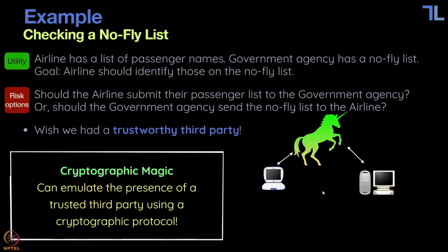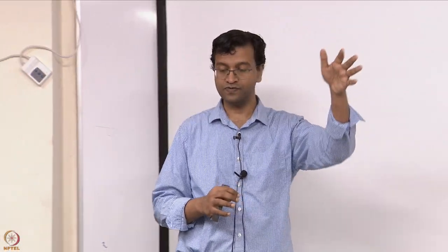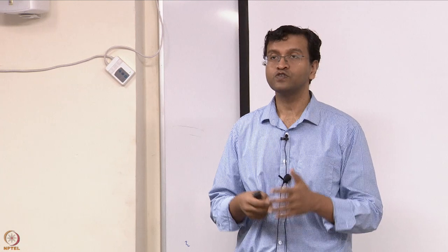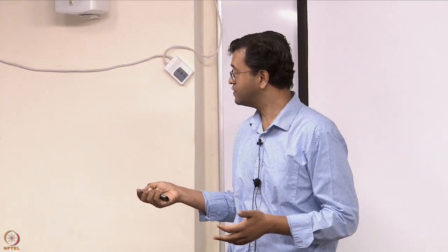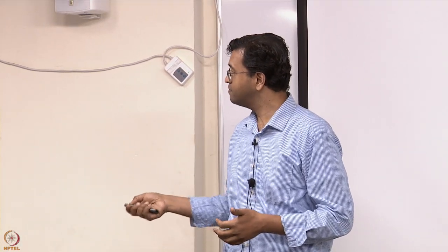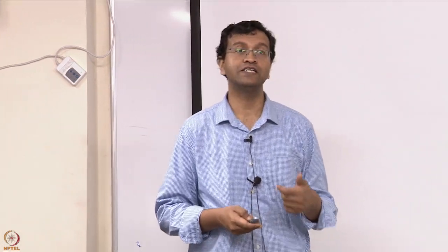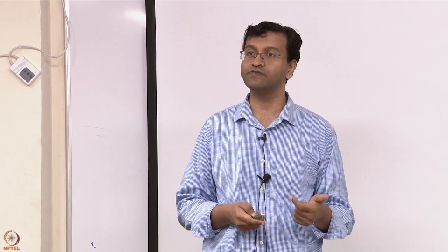The airline learns the intersection of the two lists and nobody else would learn anything else. The airline wouldn't learn anything extra about the rest of the no-fly list. We are emulating the presence of this magical trusted creature using a protocol — that's what secure two-party computation is.